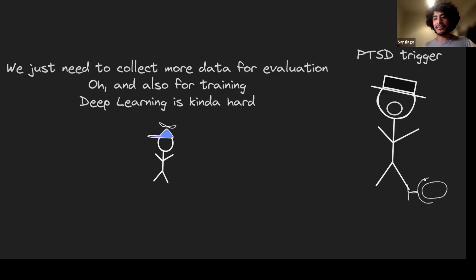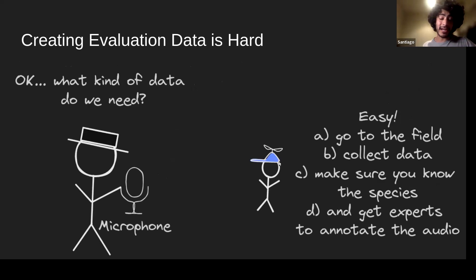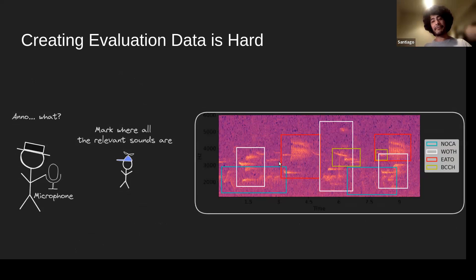At that point the government official breaks down and says: collect more data? And I reply: yes, we need to collect more data, and also more data still, because deep learning models require lots of data for good performance. What kind of data do we really need? As a non-field biologist I say: go out to the field, collect data, make sure you know the species, get multiple experts to annotate the audio.